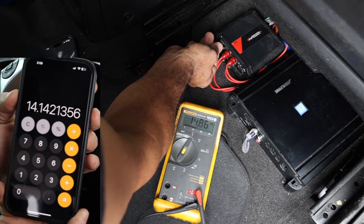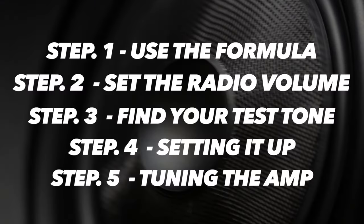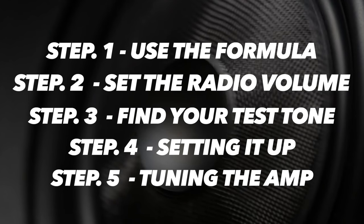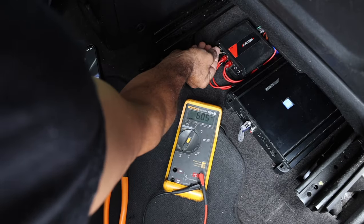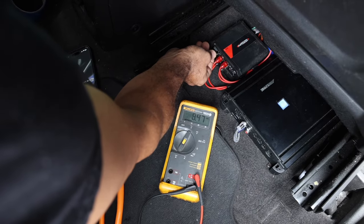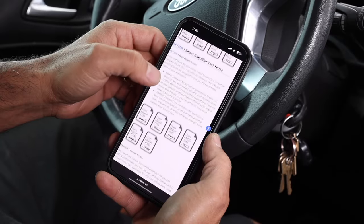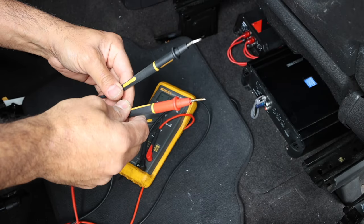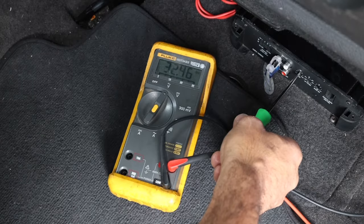It's that simple — five easy steps to tune your amplifier using just a multimeter. Hope that helps. If you have any questions or comments, go ahead and leave them in the comment section below. Thanks for watching.